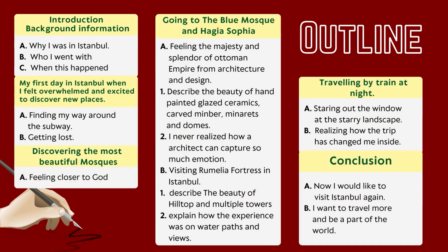Let's check a sample outline. Here we have the hook statement and thesis: 'If one had but a single glance to give the world, one should gaze at Istanbul.' When I travelled through Istanbul, I realised that the world was a work of art and beauty, and I was excited to be a part of it.